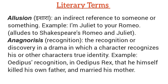What is allusion? Allusion (Hindi: ishara) is an indirect reference to someone or something. For example, if somebody says 'I am Juliet to your Romeo,' we instantly recall the play Romeo and Juliet by William Shakespeare.